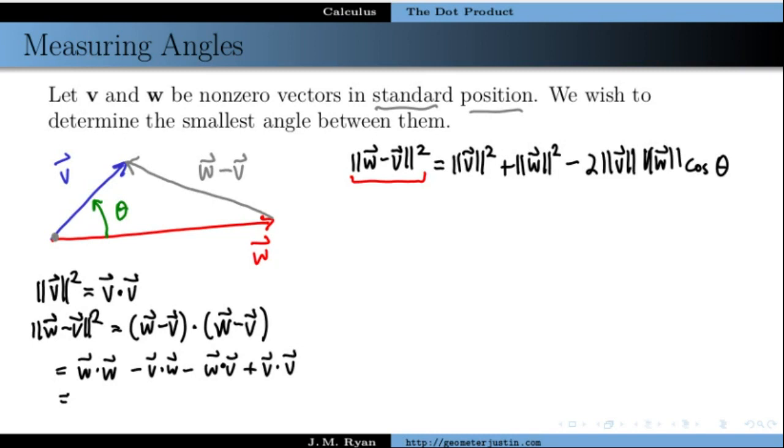And of course, the order doesn't matter in the dot product, so these two middle terms can be combined, and the two outer terms are just magnitudes themselves. So this can be written as the length of w squared minus 2 times v dot w plus the length of v squared.